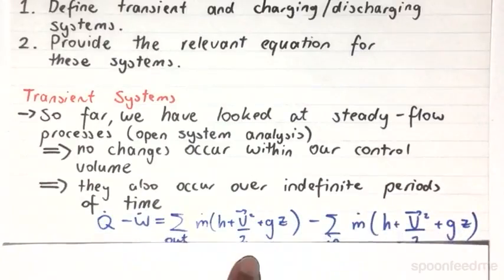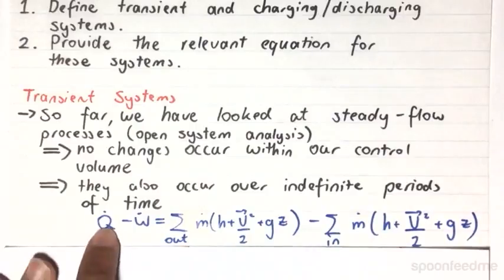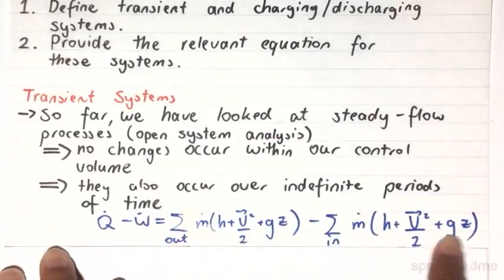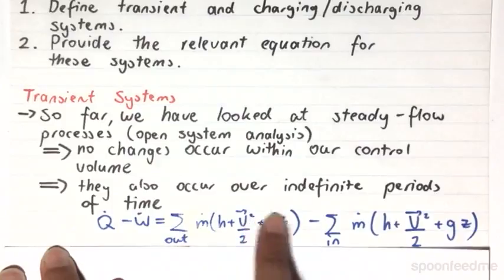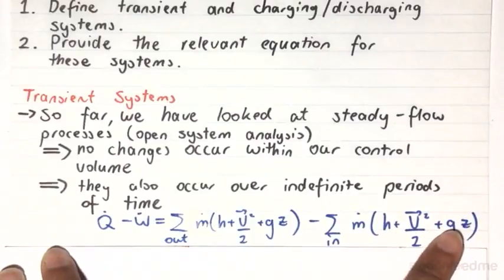So if you look back at the open system first law analysis, we have the equation Q dot minus work dot is equal to the sum of the mass flow rates out times by this term here, minus the sum of the mass flow rates in times by their respective enthalpies, kinetic energies, and potential energies.